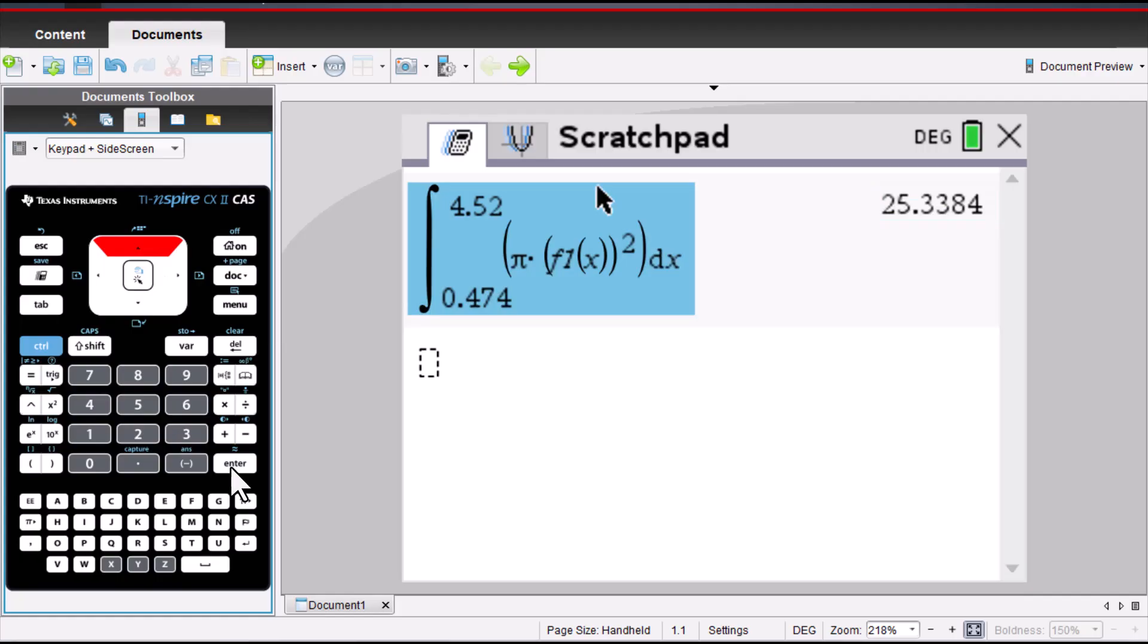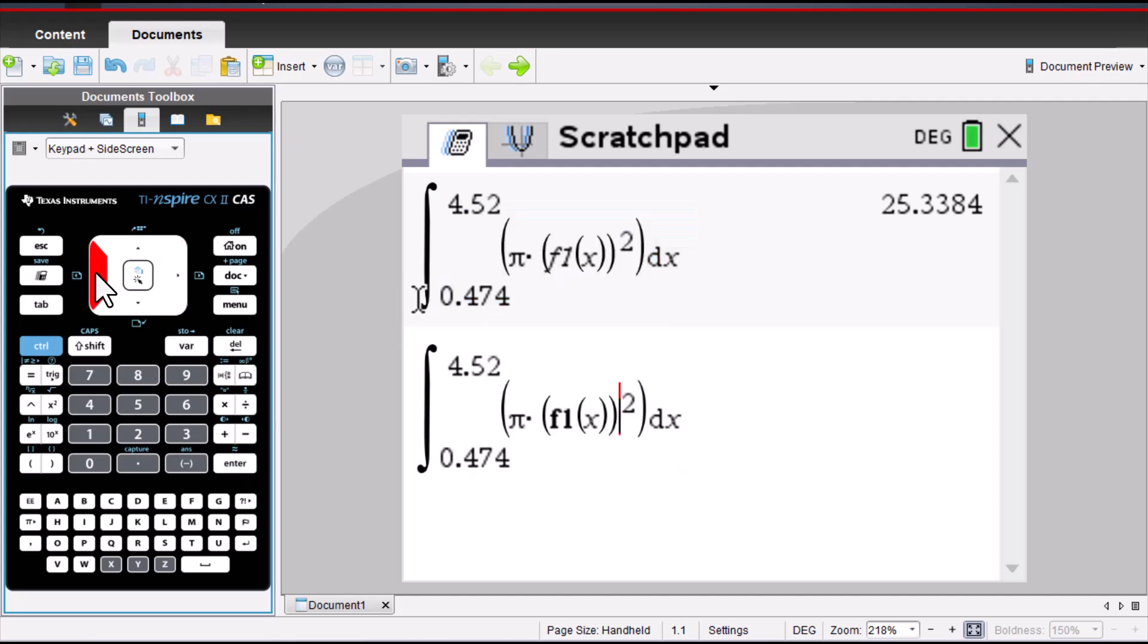Move the cursor to highlight this definite integral. Enter. Change the value from 4.52 to 5. Pi times this time f2 of x. Click on this variable, highlight f2 of x, then enter.